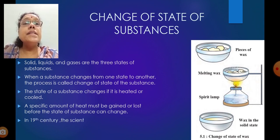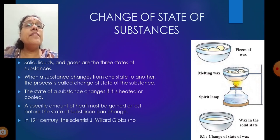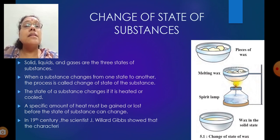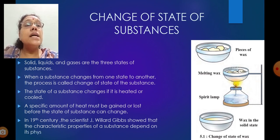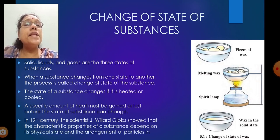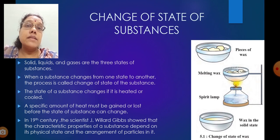In 19th century, the scientist J. Willard Gibbs showed that the characteristic properties of a substance depend on its physical state and the arrangement of particles in it. Yes, the scientist Willard Gibbs showed the characteristics depending upon the arrangement of the particles in it.